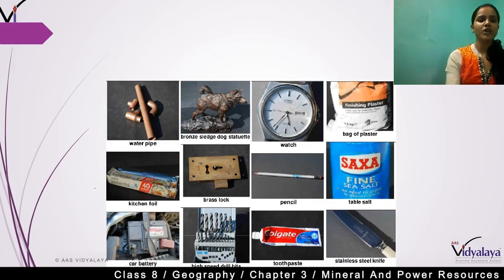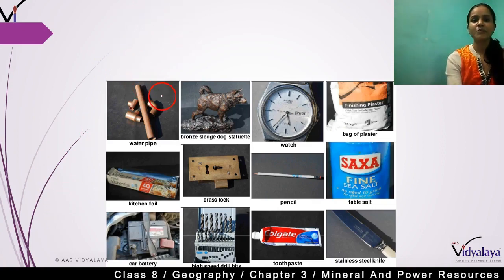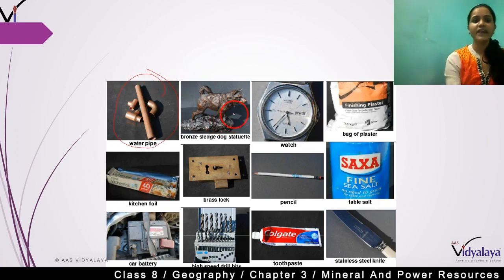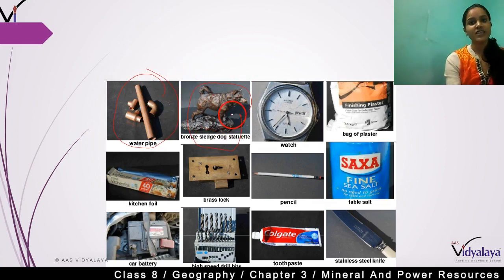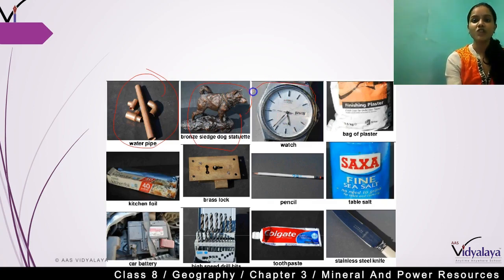Looking at this picture, you can see examples like water pipes made from copper. Bronze is extracted in different forms — you can get bronze statues. Watches are also made using minerals.